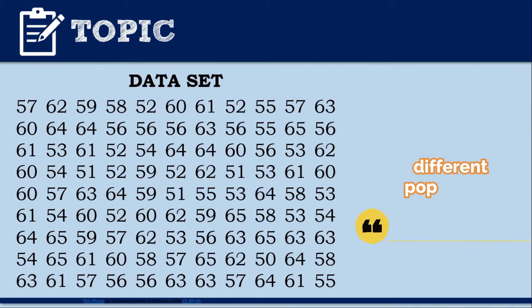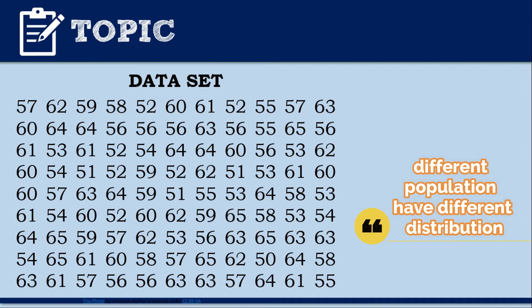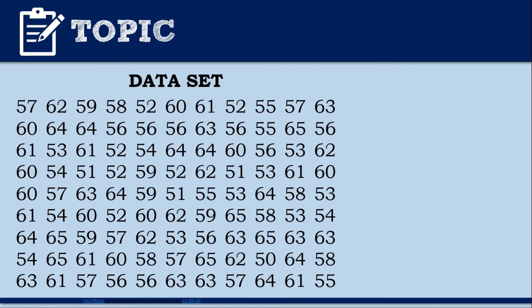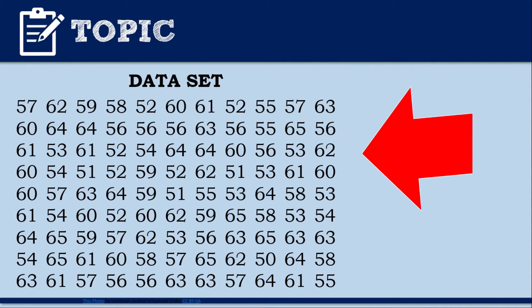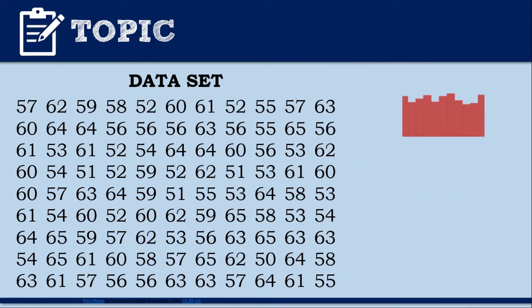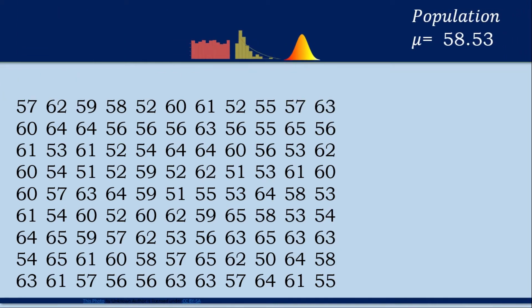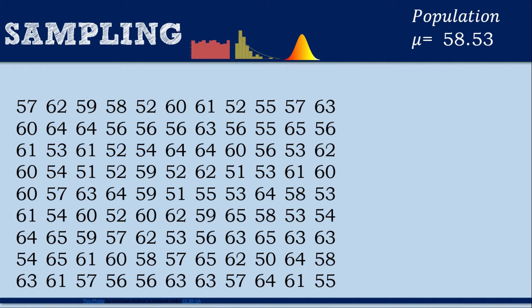Imagine that you're given this dataset. Since different populations may have different distributions, you don't actually know the type of distribution for this dataset or for any dataset. It could be a uniform distribution, an exponential distribution, or even a normal distribution, or any other types of distribution like binomial or random distribution. Assuming that is our population, the population mean is 58.53. The first thing that you want to do is to take out the subsets from the given dataset, and we call that sampling.